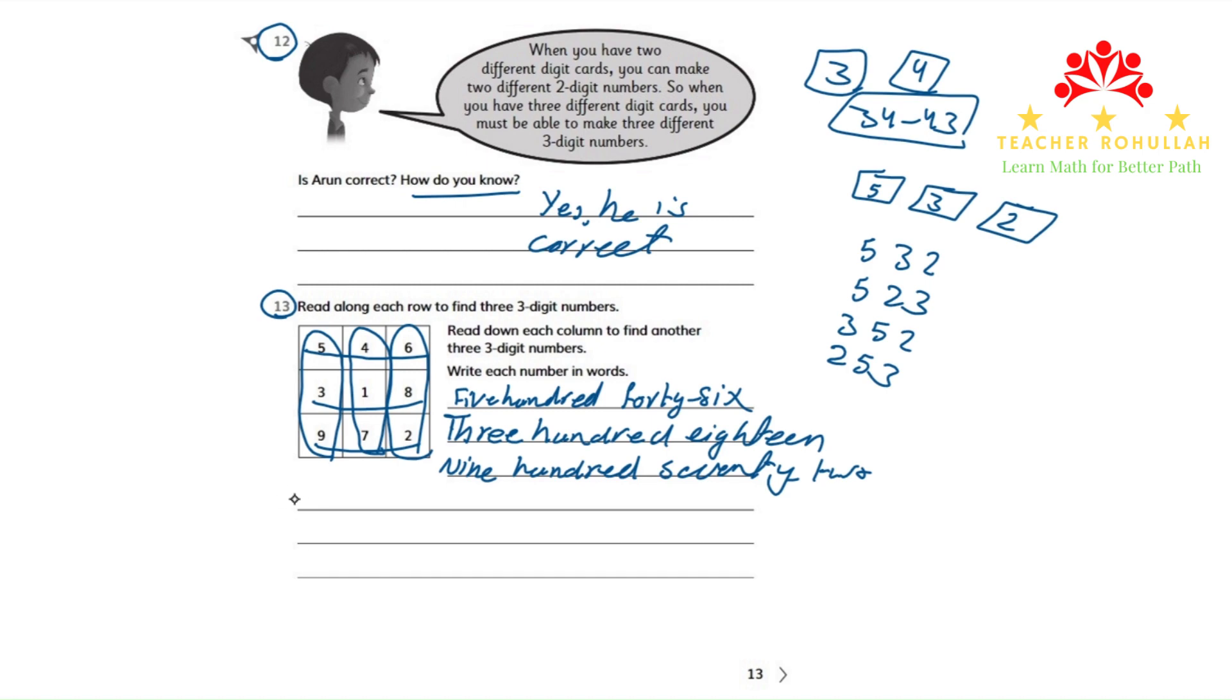So the number in the first column is 539: five hundred thirty-nine.